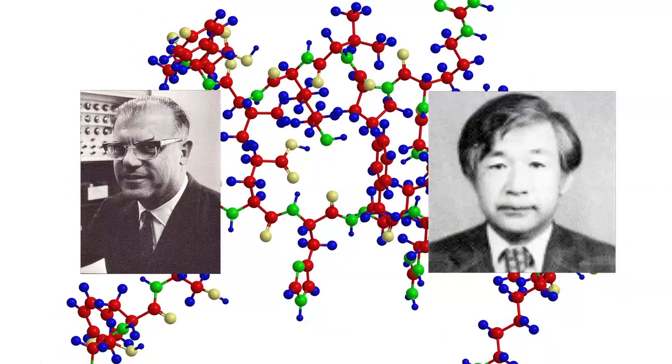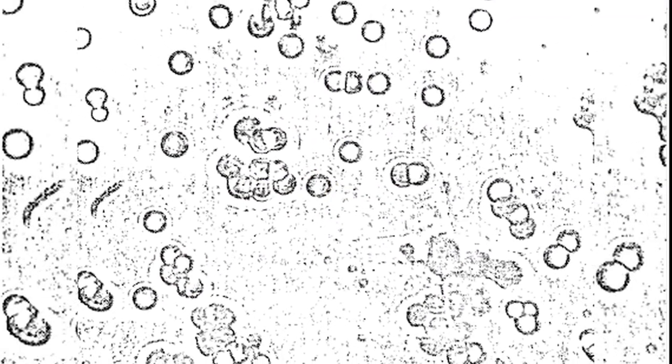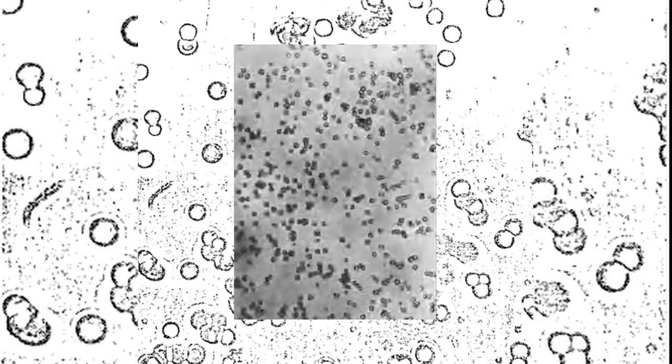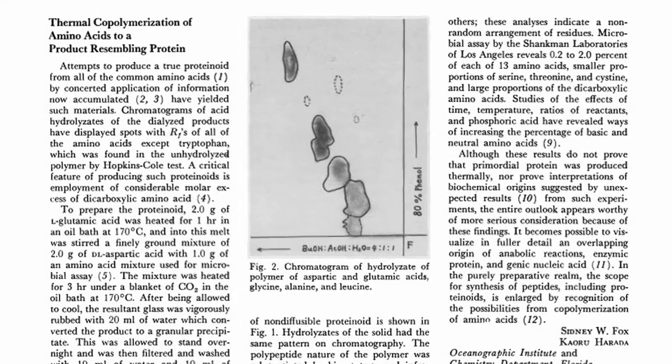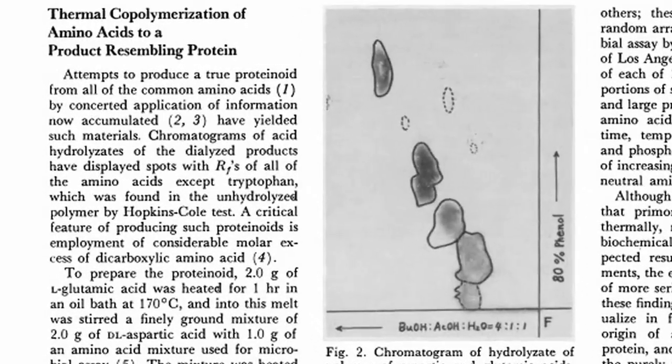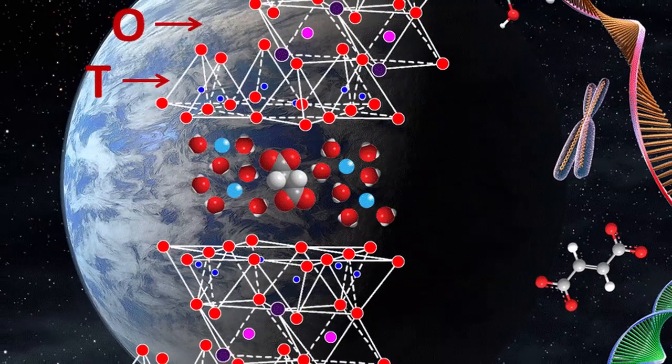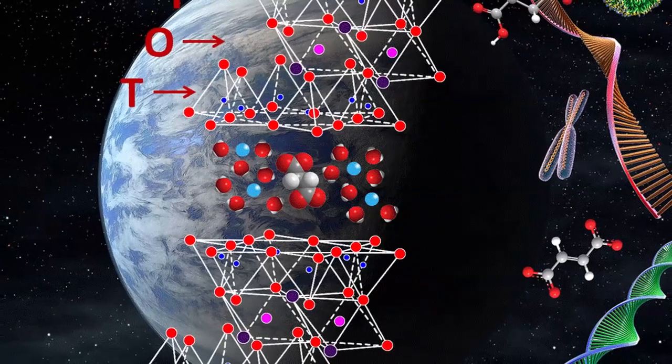It was Sidney Fox and Kaoru Harada who took the next step in assembling a protein. In order to simulate the high temperatures and alternatively wet and dry conditions that the precursors to life would have to endure, the two submerged amino acids for three hours in a slightly acidic oil bath heated to 180 degrees under a layer of CO2. After cooling and sitting overnight, a gray precipitate was left behind. After being filtered, the precipitate was put in dialysis tubing and left in water for four days. When the inside of the tubes were observed, polypeptide chains that Fox called proteinoids were present. Their results were published in their paper, Thermal Copolymerization of Amino Acids to a Product Resembling Protein, in the November 14th issue of Science. Their work suggested that further research could lead to answers to how anabolic reactions, enzymatic proteins, and nucleic acids were first formed and, in turn, how the earliest forms of life originated.